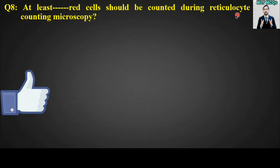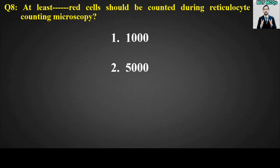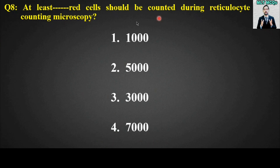MCQ number eight: At least blank red cells should be counted during reticulocyte counting microscopy. Options are: 1000 red cells, 5000 red cells, 3000 red cells, or 7000 red cells. The right answer is option number one — at least 1000 red cells should be counted during reticulocyte counting microscopy.